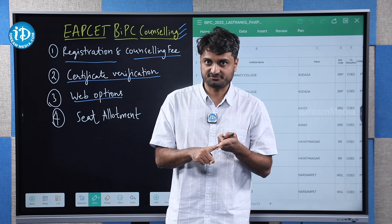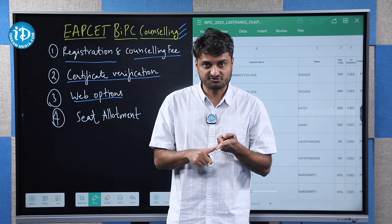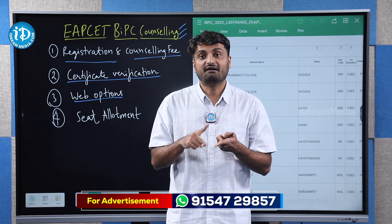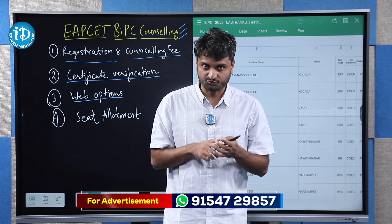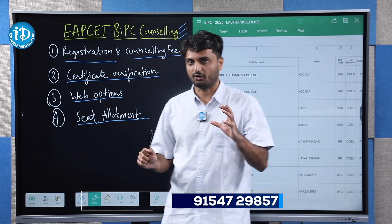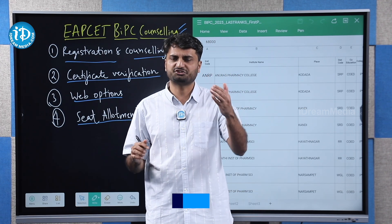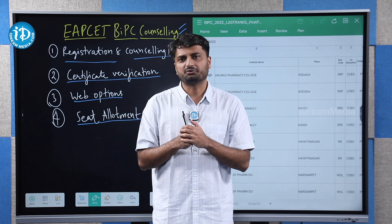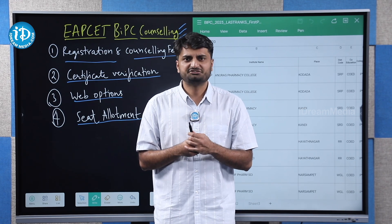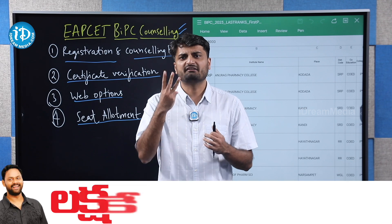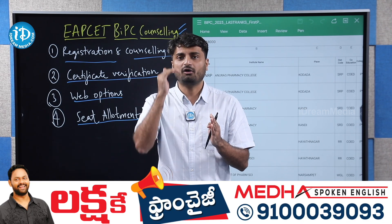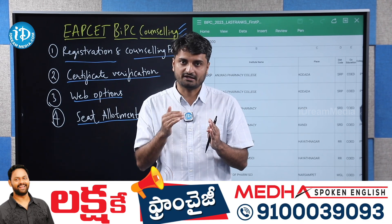You will have certificates and cutoffs available. The final part is seat allotment, where you have options and can get your allotment. Generally, counseling is conducted in 3 rounds. We have official notifications and details for every counseling round.